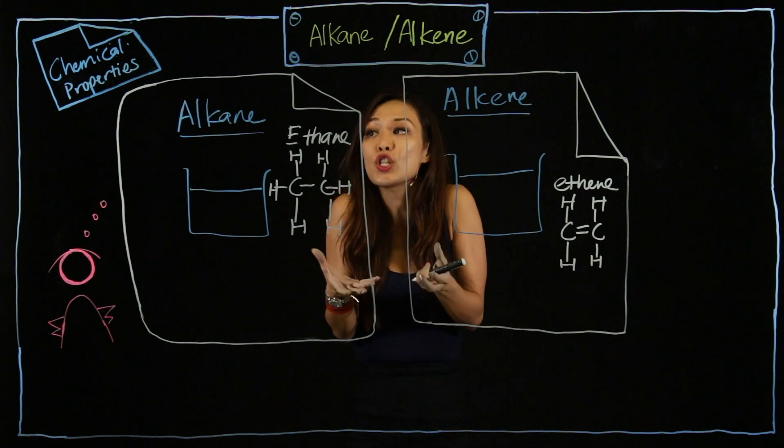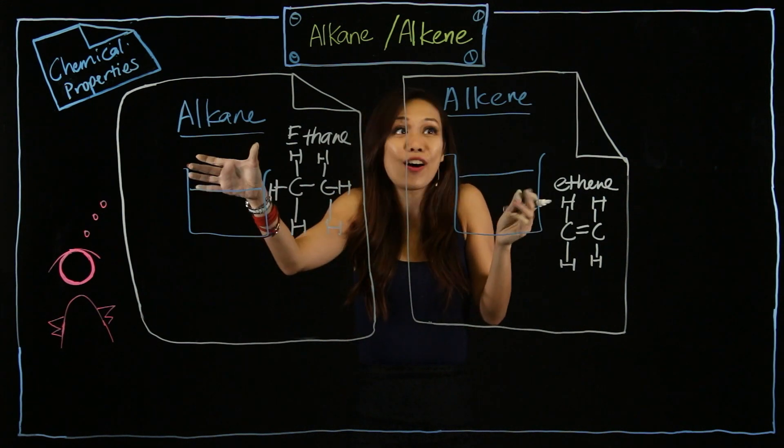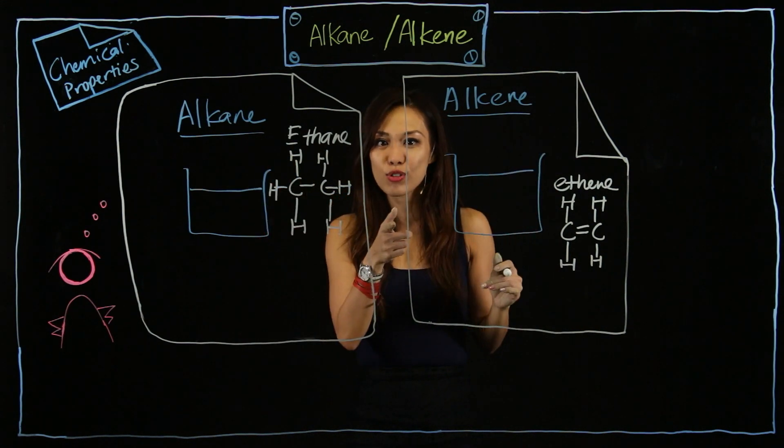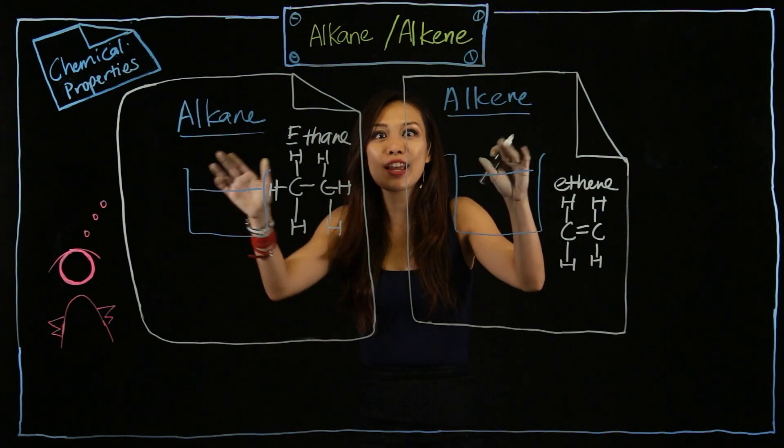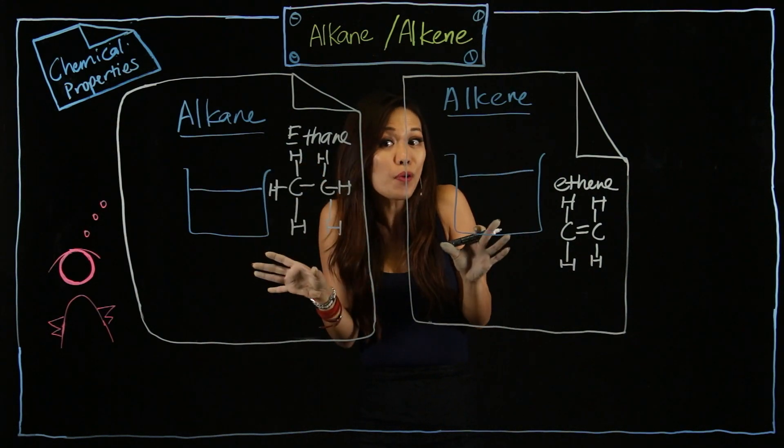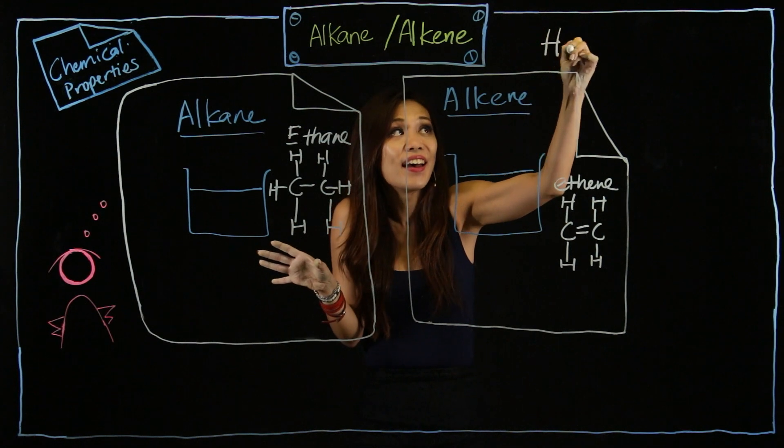From the structure you can say, but if I say name me a chemical reaction to differentiate or to distinguish between alkane and alkene, what would you do? Well, remember alkene and alkane, they both will react with halogen.